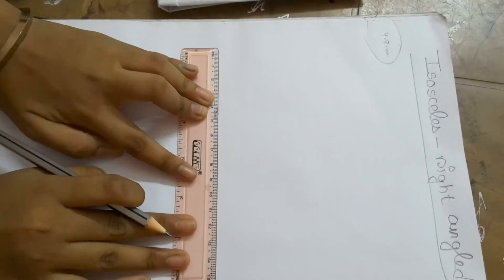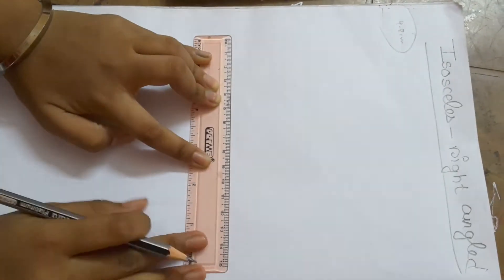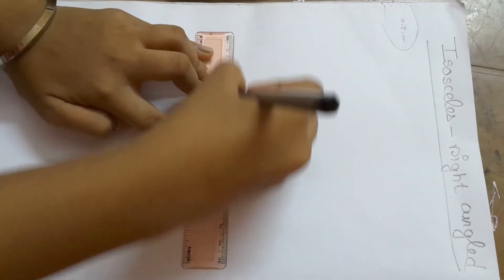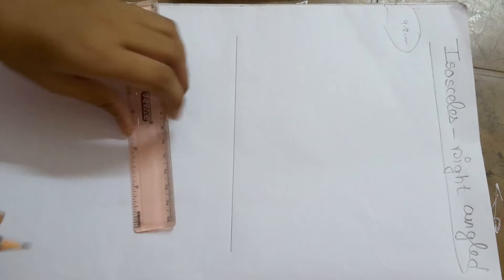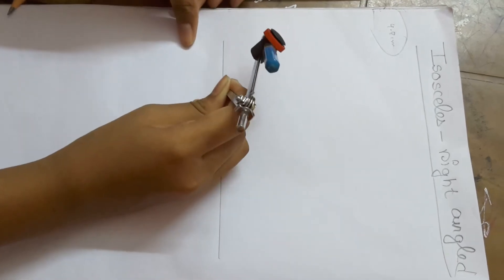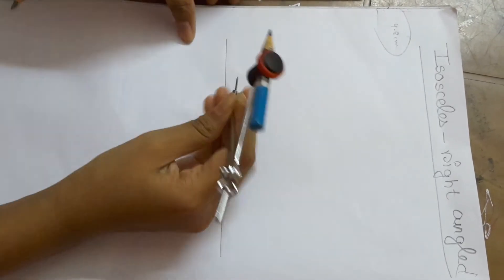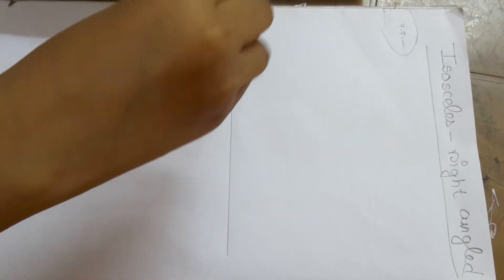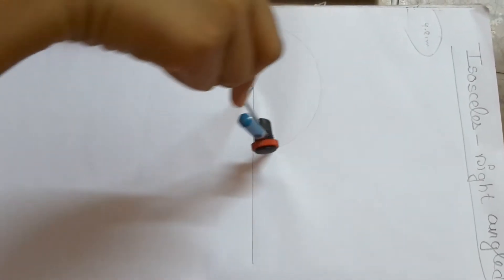First we take a right angle measurement. Any measurement you can take. Take the compass with any measurement. Make an arc.